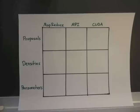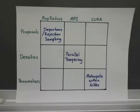We contribute to the Monte Carlo canon by parallelizing across proposals, densities, and parameters. This is achieved through MapReduce, MPI, and CUDA respectively.